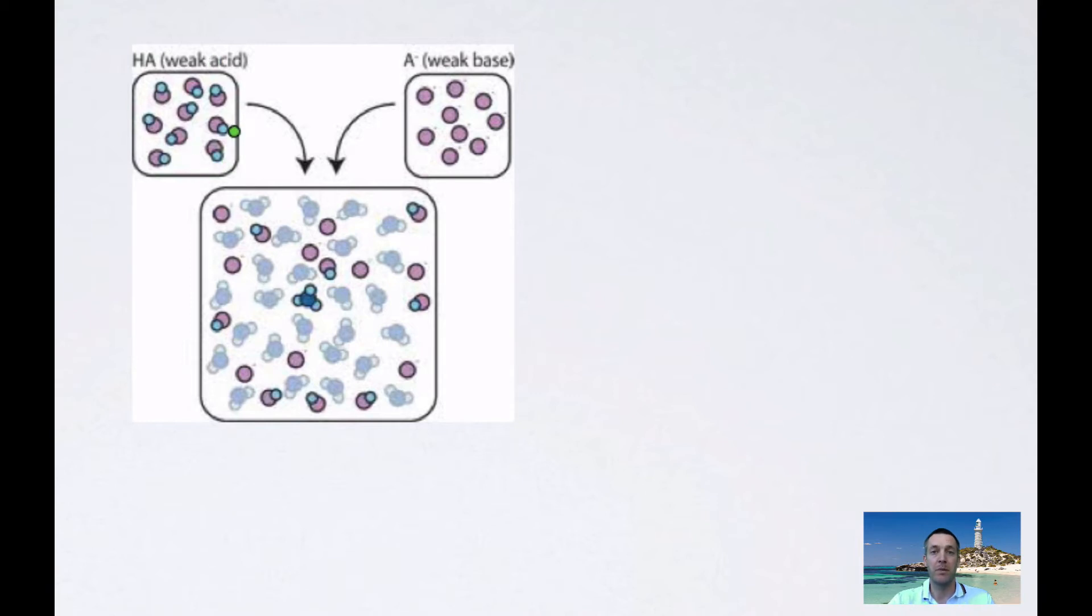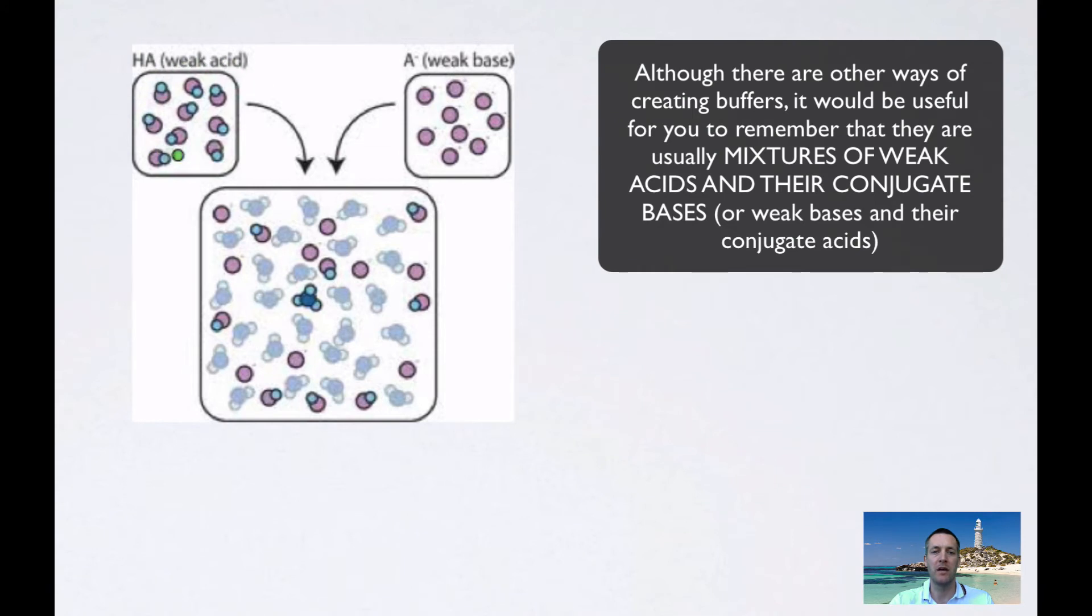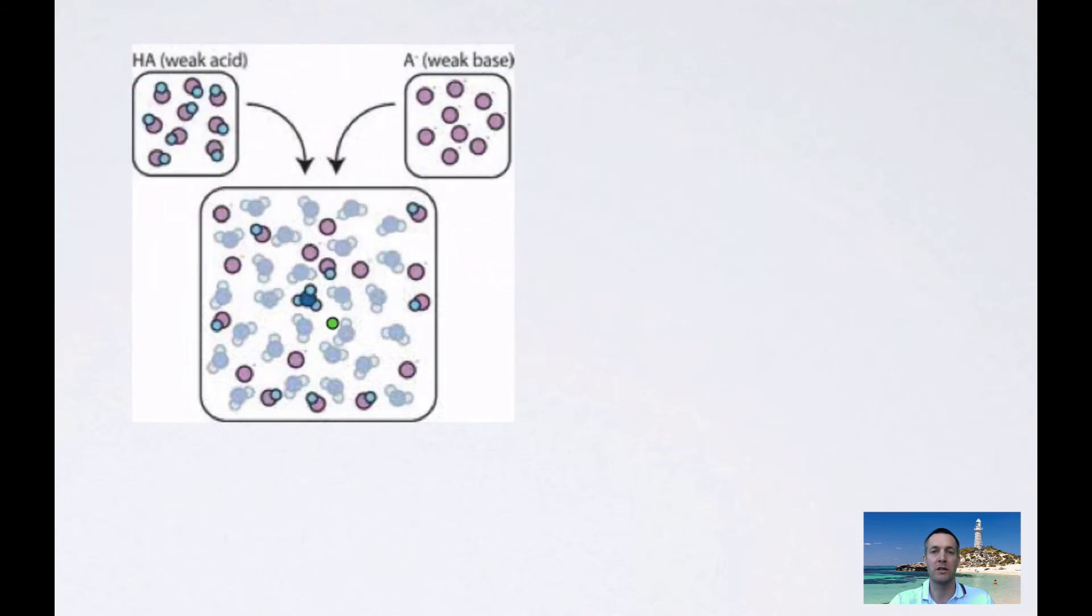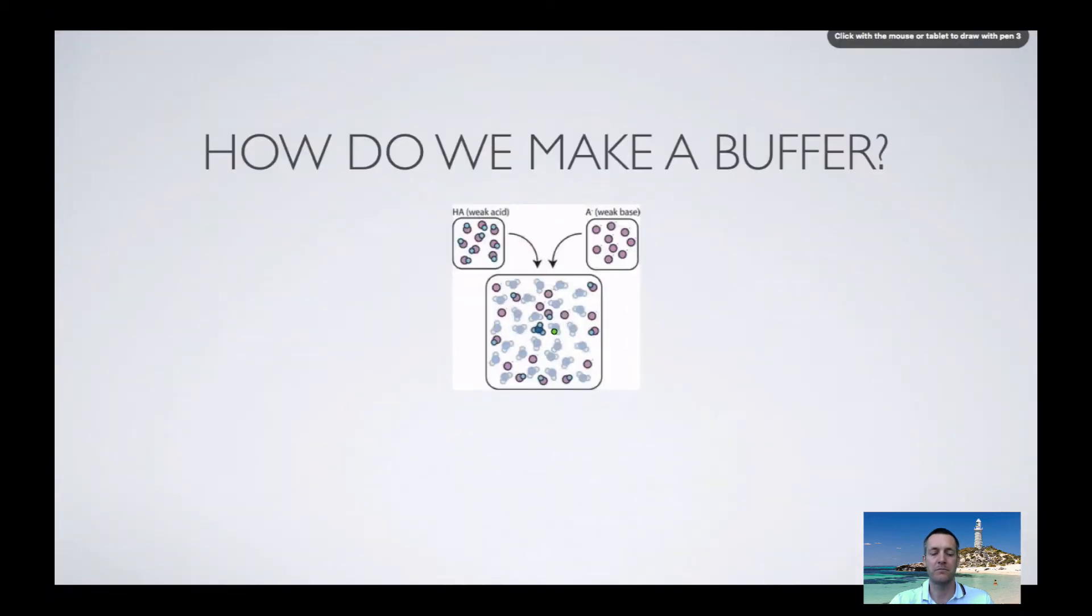That will obviously react with bases. So we need something that will react with acids. Now, we want a base, but not a base that's going to react with this acid. So why don't we choose the conjugate base of that acid? So perhaps if this was ethanoic acid, this might be sodium ethanoate. And now, all of a sudden, we've got lots of ethanoate ions in our solution, we've got lots of ethanoic acid molecules in our solution, and we've got a solution that contains something that reacts with acids and something that reacts with bases. So that's how we make one.